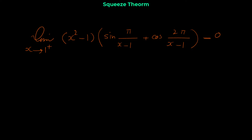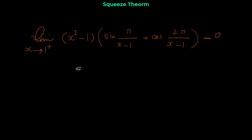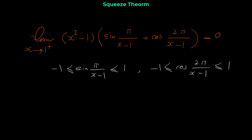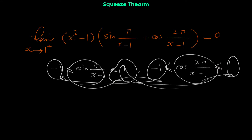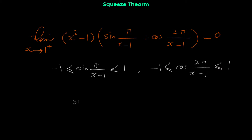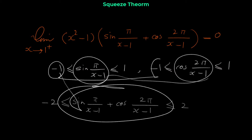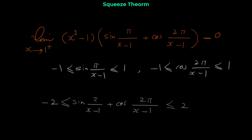Like the previous examples, we start from the trig part. But here we have two trig parts: sine plus cosine. We know: sin(π/(x−1)) is always between −1 and 1, and cos(2π/(x−1)) is also between −1 and 1. Since we have sine plus cosine, we add the inequalities: we add middle to middle, left to left, and right to right. So we conclude: sin(π/(x−1)) + cos(2π/(x−1)) is between −2 and 2. Adding −1 and −1 gives −2, and 1 plus 1 gives 2. Sine plus cosine is always between −2 and 2.